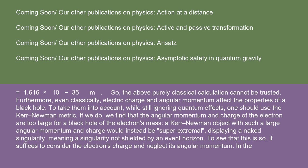So, the above purely classical calculation cannot be trusted. Furthermore, even classically, electric charge and angular momentum affect the properties of a black hole. To take them into account while still ignoring quantum effects, one should use the Kerr-Newman metric.